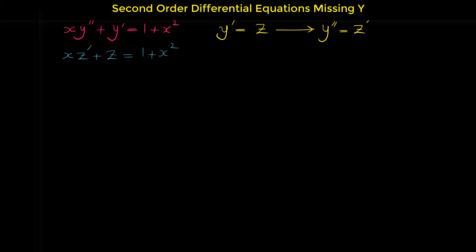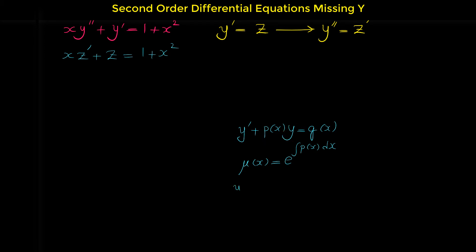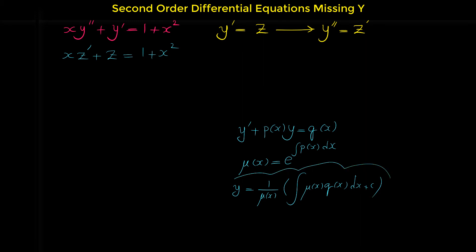We know how to solve this type of differential equation. Let me remind you: in general, if we have a first order differential equation in the form y prime plus P(x) times y equals Q(x), first we find the integrating factor mu of x, which equals e to the power of the integral of P(x) dx, where P(x) is the coefficient of y. Then y equals 1 over mu times the integral of mu(x) times Q(x) dx plus a constant.